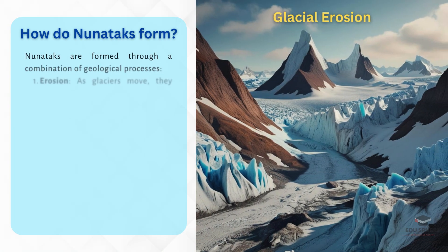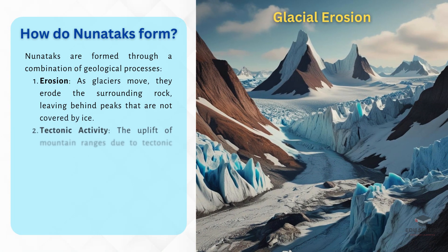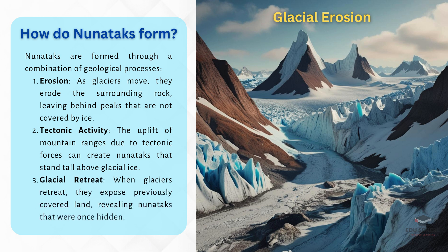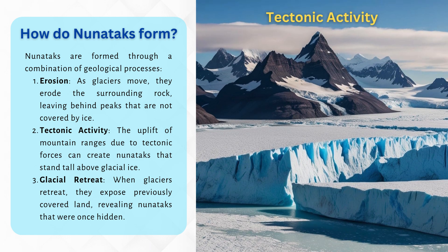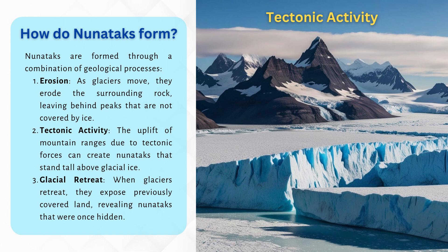Nunataks are formed through a combination of geological processes. As glaciers advance, they erode the landscape, but some peaks remain above the ice due to their elevation. The dark coloring of these rocks stands out in stark contrast against the ice-covered terrain.